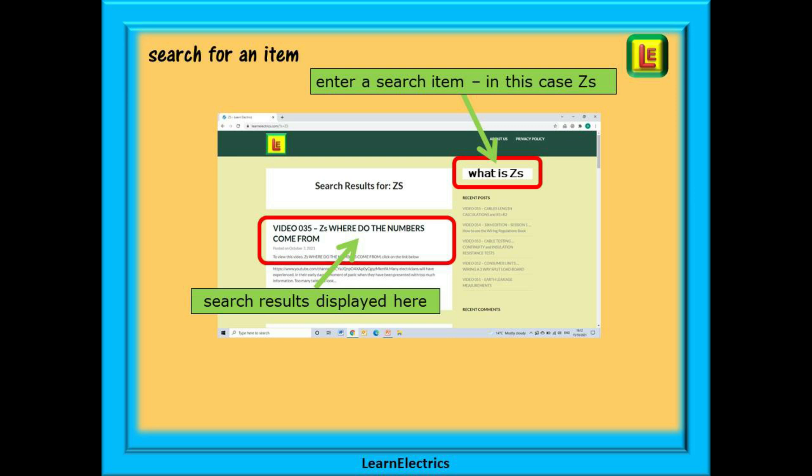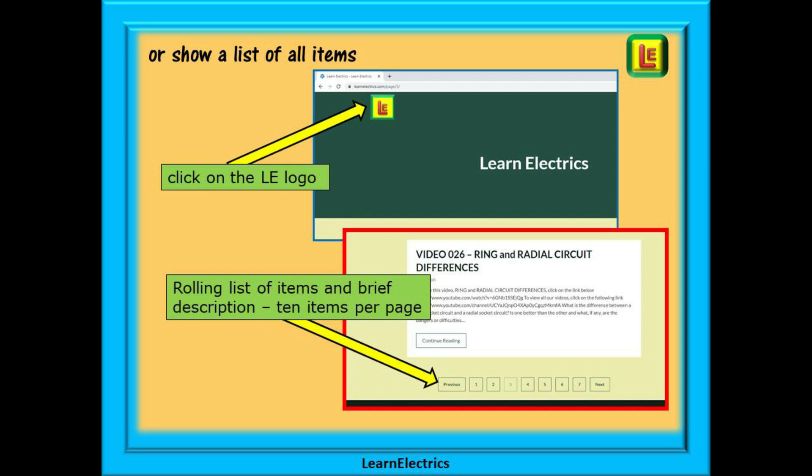They will be shown with a short description and each video listed will have a link shown that will take you directly to that exact YouTube video. Or you can browse through a list of all the available items and videos.